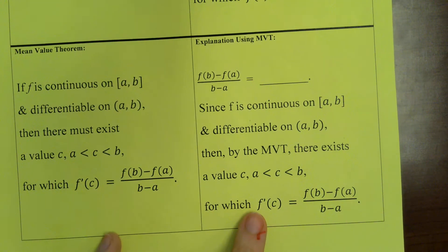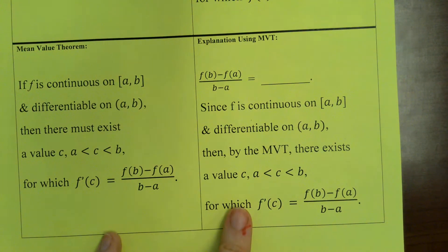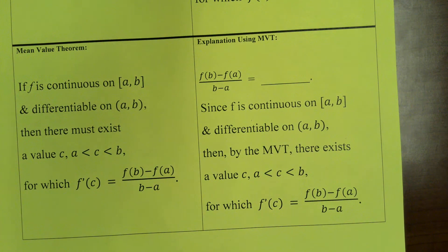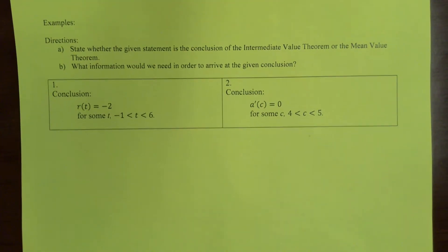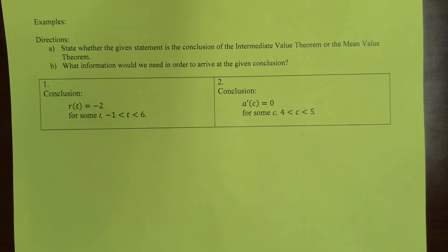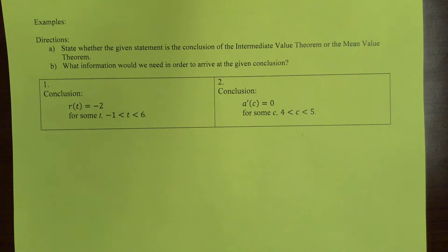The explanation format for the mean value theorem would go something like this. On the practice, I'm just going to do a couple examples. The directions state whether the given statement is the conclusion of the intermediate value theorem or the mean value theorem. And then part B asks what information would we need in order to arrive at the given conclusion — basically, how would you format your explanation in order to state the given conclusion.